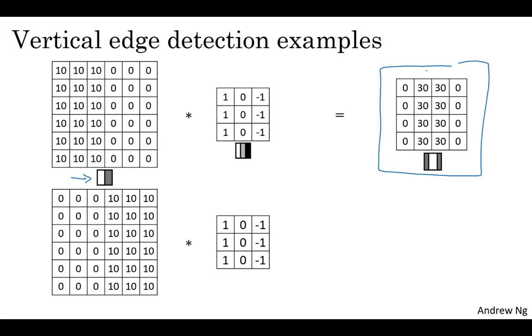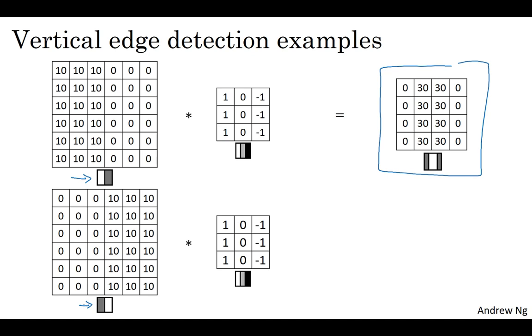What happens if an image where the colors are flipped - darker on the left and brighter on the right? So the tens are now on the right half of the image and the zeros on the left. If you convolve it with the same edge detection filter, you end up with negative 30s instead of 30 down the middle.